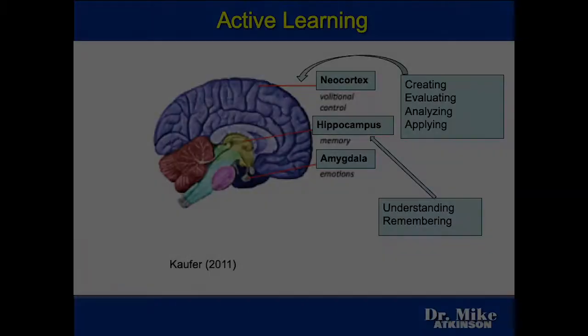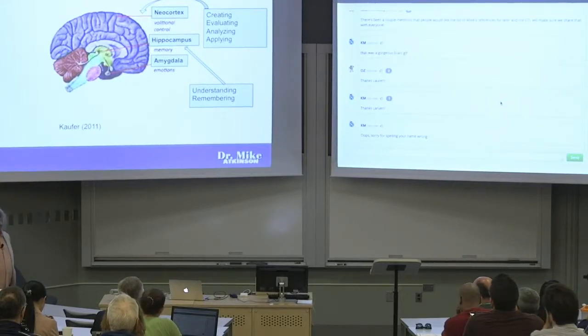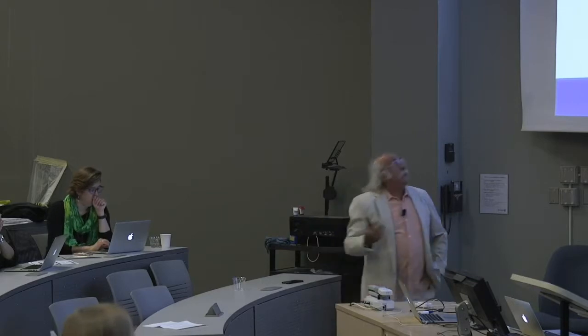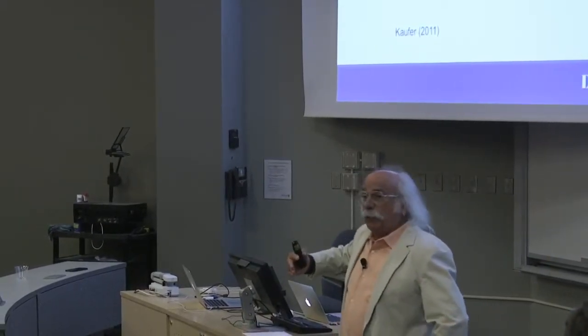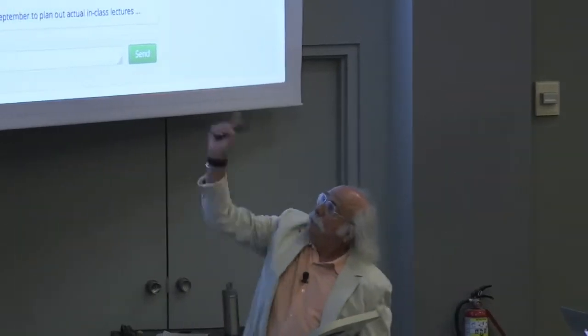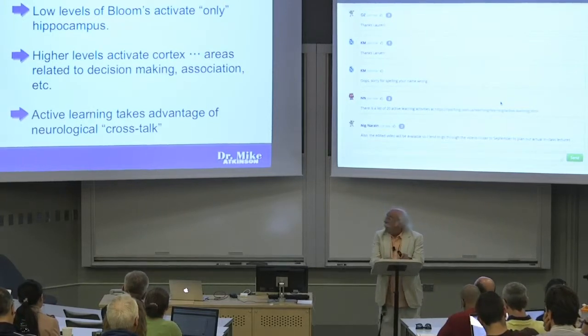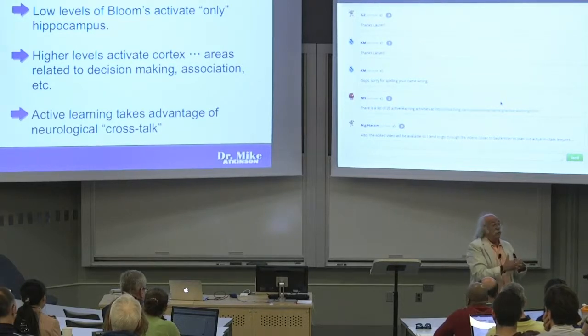We've all heard of Bloom's taxonomy. Some people have suggested — Coffer, 2001 — that if you use low levels of Bloom's, understanding and remembering, you basically just shove that information through the hippocampus. If you use higher levels — creating, evaluating, and so on — it's got to get through the hippocampus but also makes its way to the cortex, where we have all the interesting things we do. So we want to make sure we use this higher-level stuff as much as we can. What Coffer suggested is active learning takes advantage of this neurological crosstalk — stuff's happening and connecting all over the place, and now you're actually getting it in and it works a whole lot better.